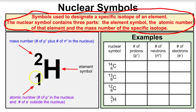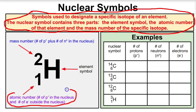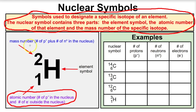Here we have the nuclear symbol of one specific isotope of hydrogen. We have the chemical symbol for hydrogen, and then in the bottom left-hand corner we have the atomic number — this is the number of protons in the nucleus and the number of electrons outside of the nucleus. This number tells you what the element is; it's number one on the periodic table, the atomic number for hydrogen.